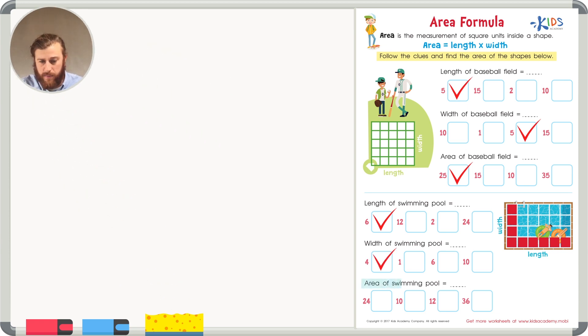So to find the area of the swimming pool, we can multiply six times four. Let's skip count by fours six times to find the area. Four, eight, twelve, sixteen, twenty, and twenty-four. Six times four equals twenty-four, making the area of the swimming pool twenty-four square units.